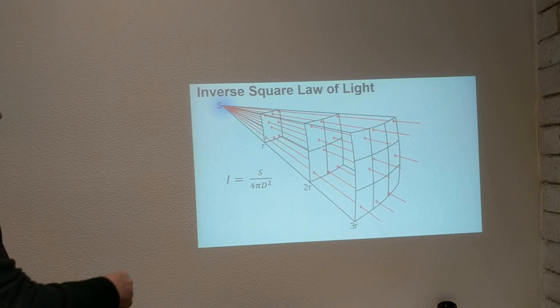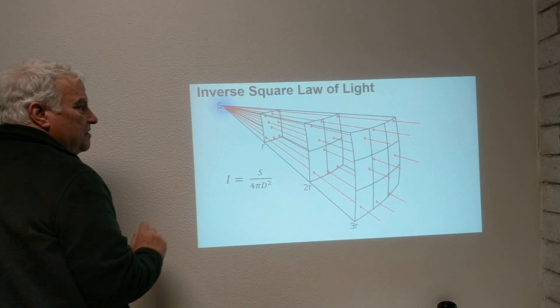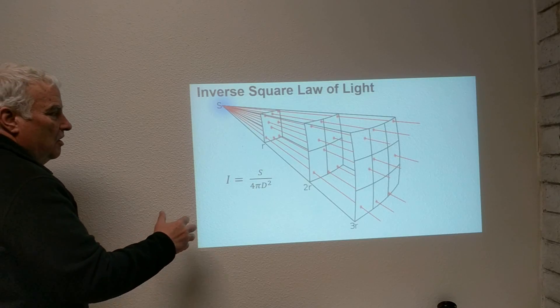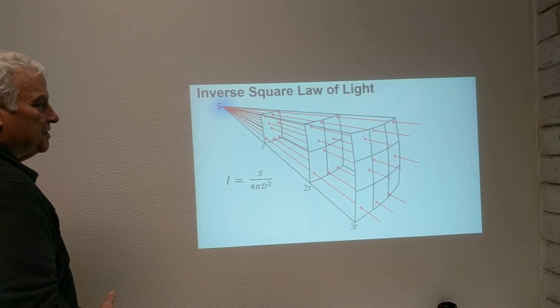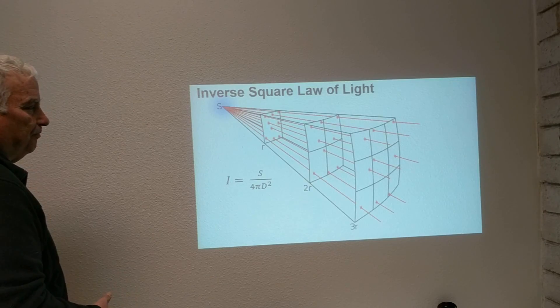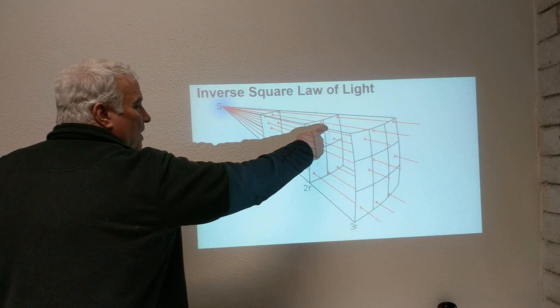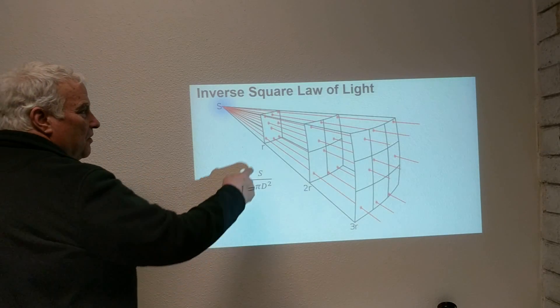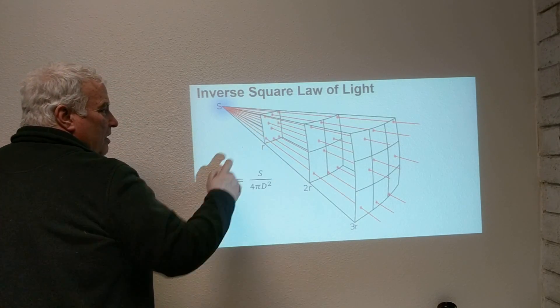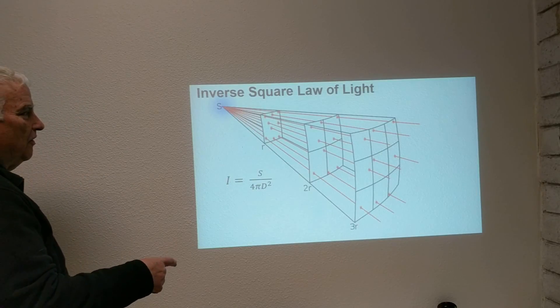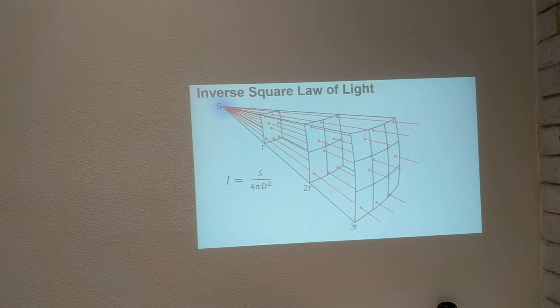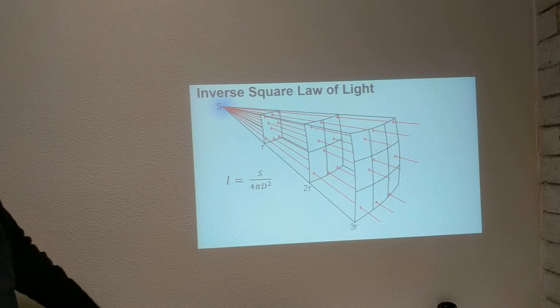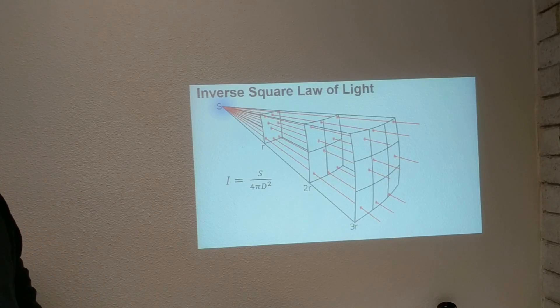Another sphere is set up twice as far away from the source. The sphere has four times as much surface area, so the light rays that went through that one unit of area on the first sphere end up going through four units here. This is because the surface area of the sphere at twice the radius has two squared, or four times the amount of area.